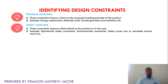Next is safety constraints. Whenever we are designing a product, it should not impose a direct threat to the user. For example, operational safety constraints, environmental constraints, and safety issues due to inevitable human errors. In a three-pin plug-top, the third pin will be of longer length and thick design to ensure the safety of the user. This is considered a safety constraint in developing a particular product.